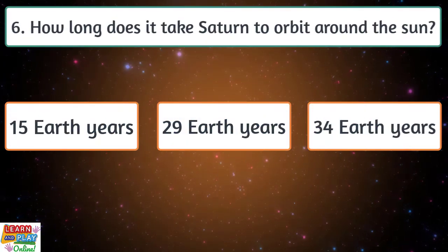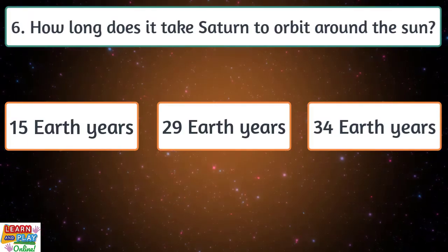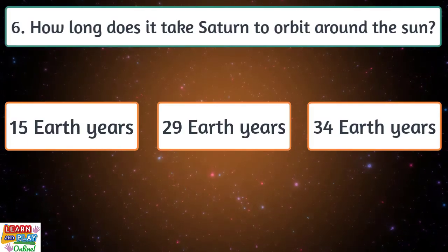Question 6. How long does it take Saturn to orbit around the Sun? 15 Earth years, 29 Earth years or 34 Earth years?